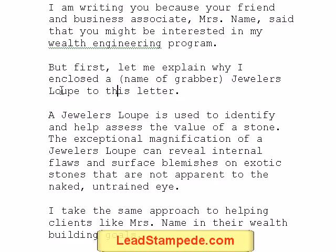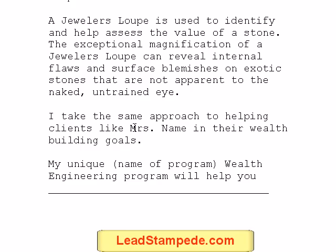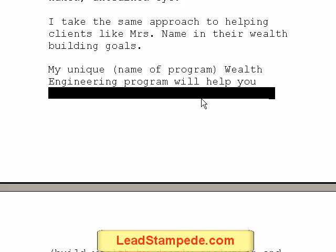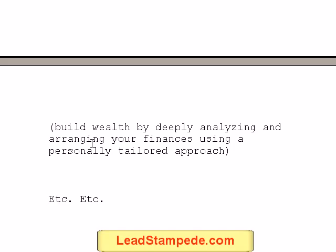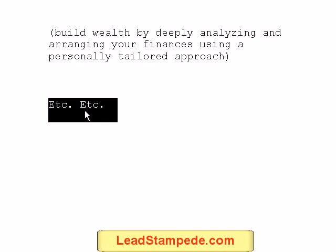So I used 'wealth engineering' — you can use any description of what you do here. 'But first let me explain why I enclosed a jeweler's loop with this letter. A jeweler's loop is used to identify and help assess the value of a stone. The exceptional magnification of a jeweler's loop can reveal internal flaws and surface blemishes on exotic stones that are not apparent to the naked, untrained eye. I take the same approach to helping clients like Mrs. [Name] in their wealth building goals. My unique wealth engineering program will help you...' and here's where you describe your benefit.